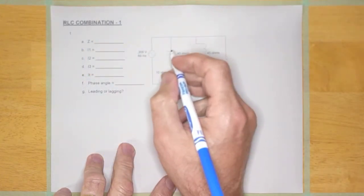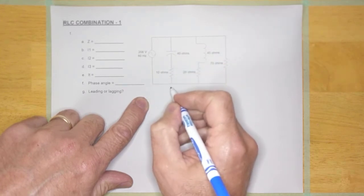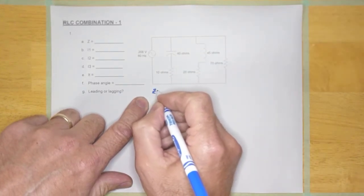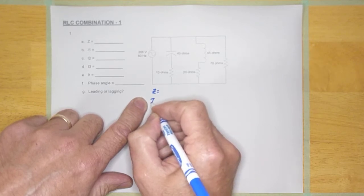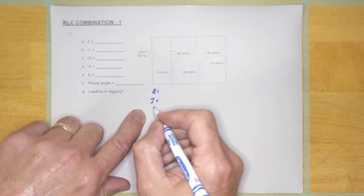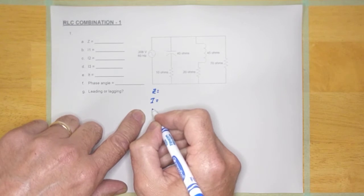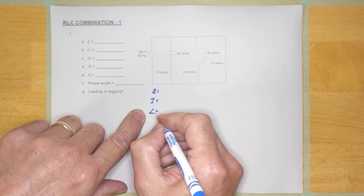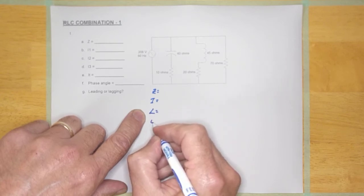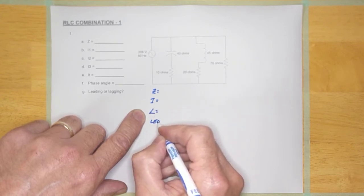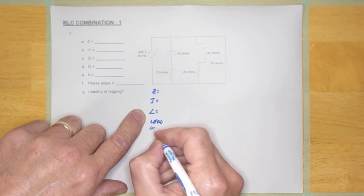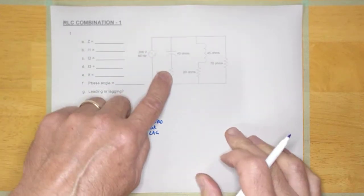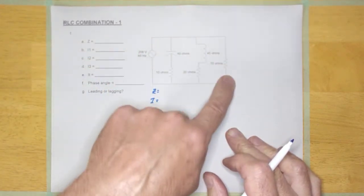So when I simplify this circuit, I'm going to calculate four things about each one of these rungs. The first of the four is the impedance of the rung, then the current in the rung, then phase angle of the rung, and then does the circuit lead or lag. We're going to do that for this rung, we're going to do it for this rung, and then we're going to do it for this rung.